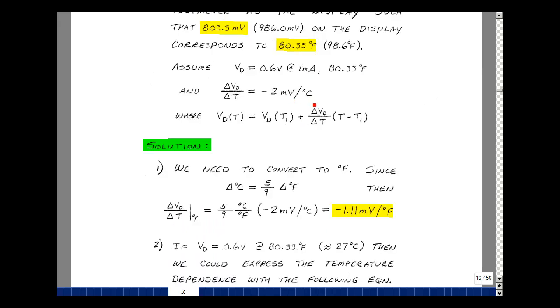Our temperature coefficient is in volts per degree C. Let's convert that into volts per degree F. The change in temperature in degrees C is related to the change in temperature in degrees Fahrenheit by five-ninths. Taking the change in voltage with respect to the change in temperature in degrees Fahrenheit by multiplying by the scale factor five-ninths, which has units of degrees C per degree F, and multiplying that by our temperature coefficient of minus 2 millivolts per degree C. The degrees C's cancel, and then five-ninths times minus 2 millivolts is minus 1.11 millivolts per degree Fahrenheit.